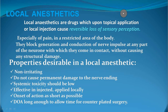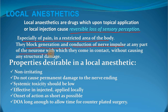Local anesthesia are the drugs which upon topical application or local injection cause reversible loss of sensory perception — the sensation of pain in a restricted area of the body. They block germination and conduction of nerve impulses at any part of the neuron with which they come in contact, without causing any structural damage.